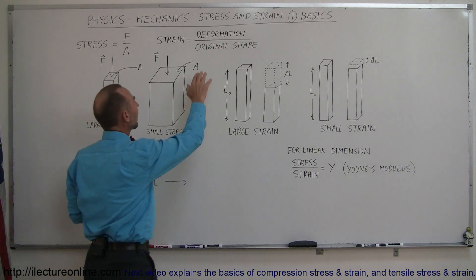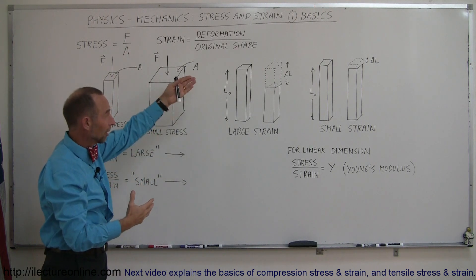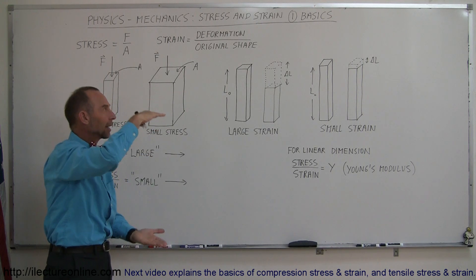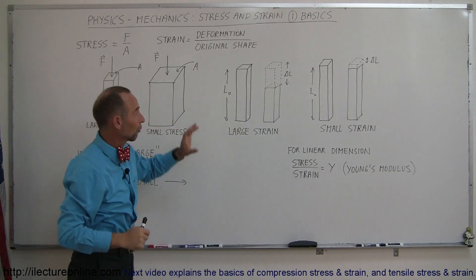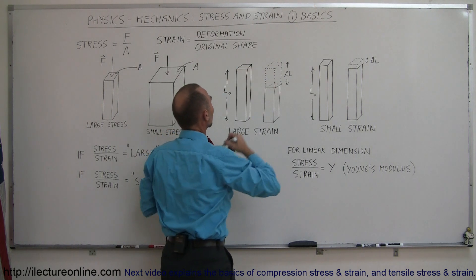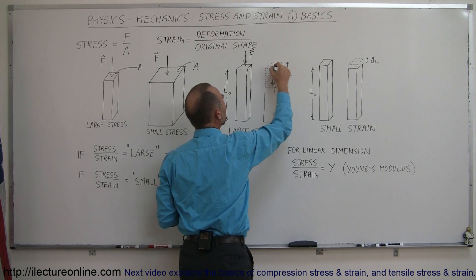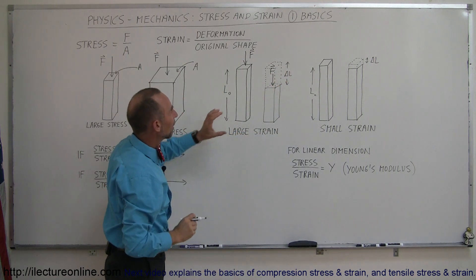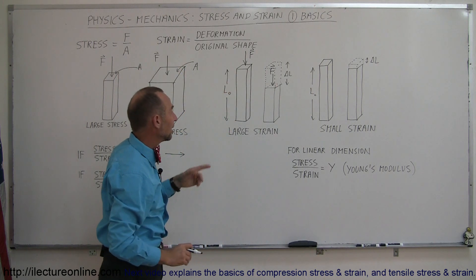The definition of strain is that it's a ratio of how much the material deforms — let's call that deformation. In the case of a linear element, like a linear beam, if we push down on the beam we may make the beam a little shorter. We're deforming it by making it shorter, and that's called deformation. If we find the amount by which it deforms divided by the original size of the object — for example, the reduction in the length of the beam after we apply a certain force — then the ratio of the deformation divided by the original length is what we call the strain.